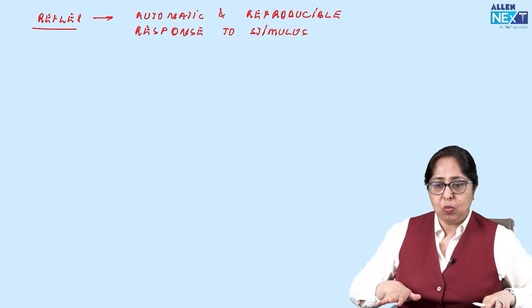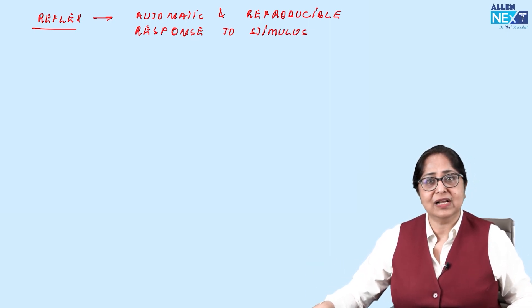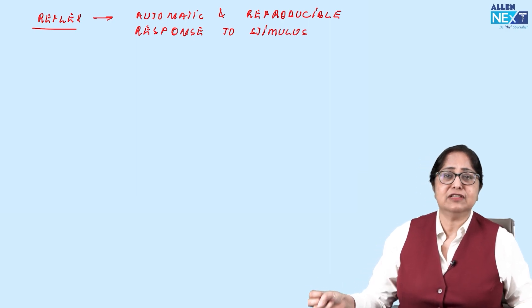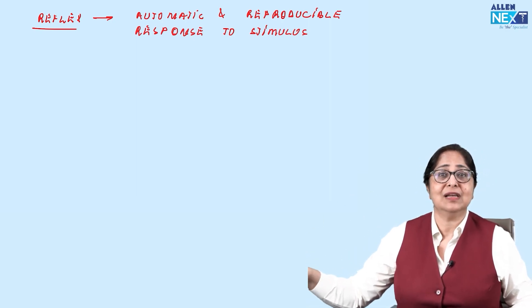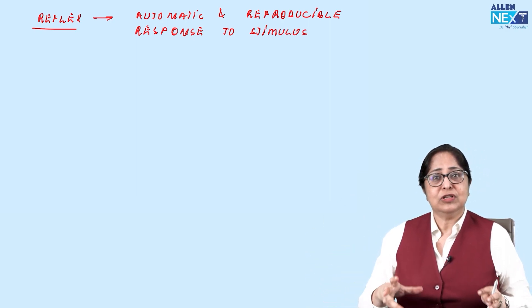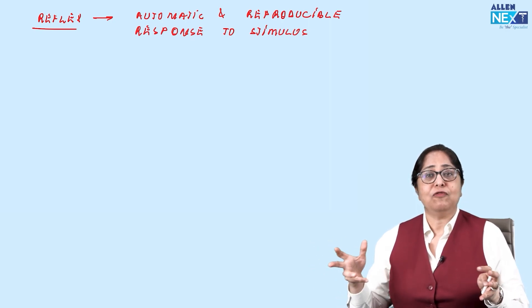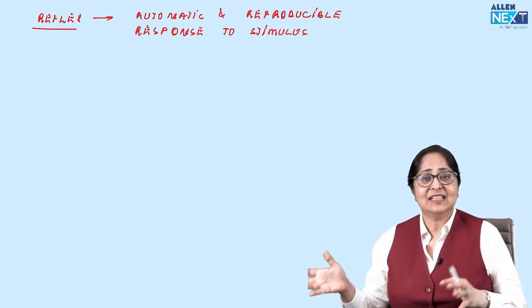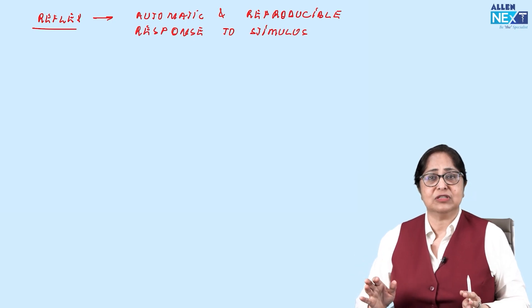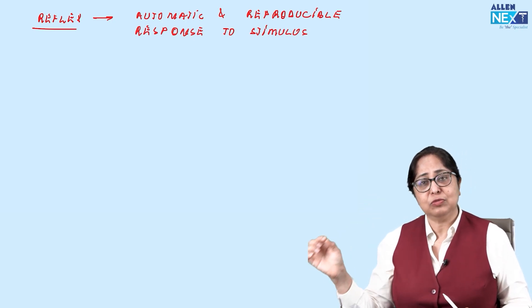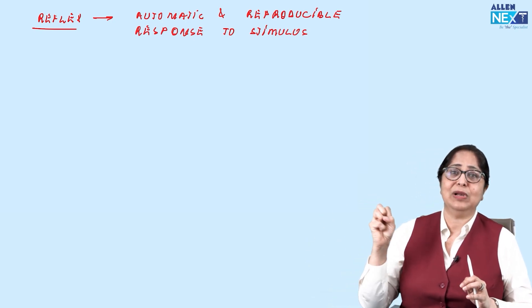For instance, you are walking barefoot and you step on broken glass — immediately there is a flexion of that particular leg. This is known as the flexor withdrawal response or flexor withdrawal reflex. It's automatic and reproducible: whenever a painful stimulus is given, that limb will flex.